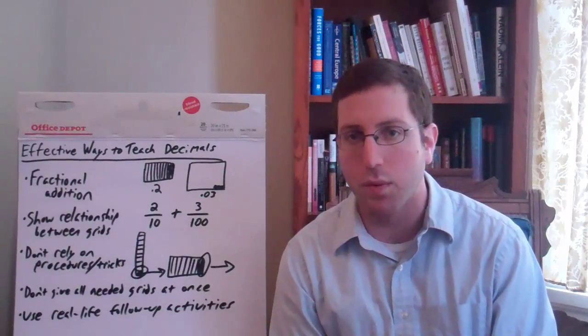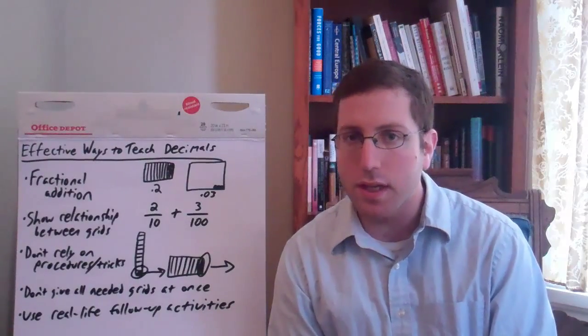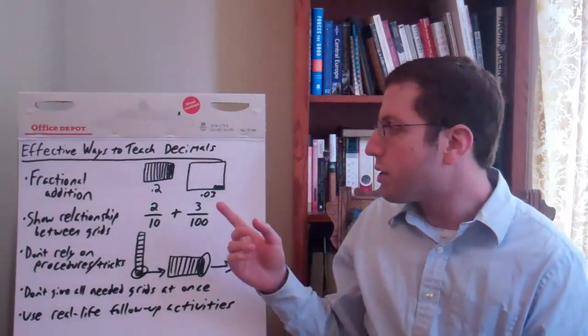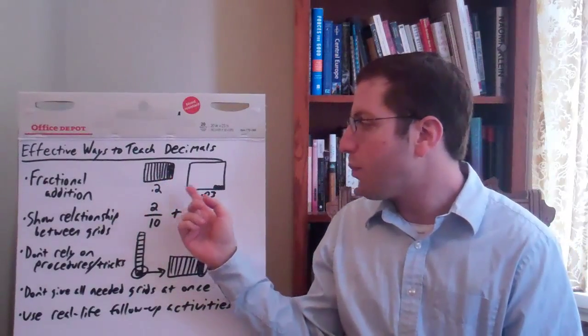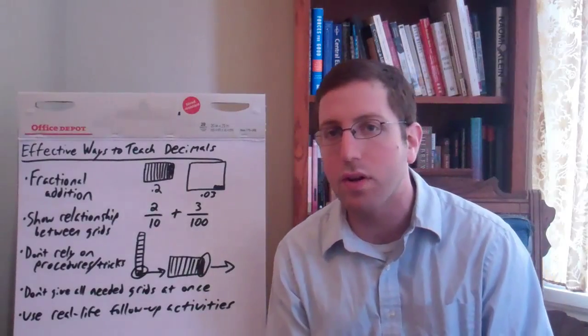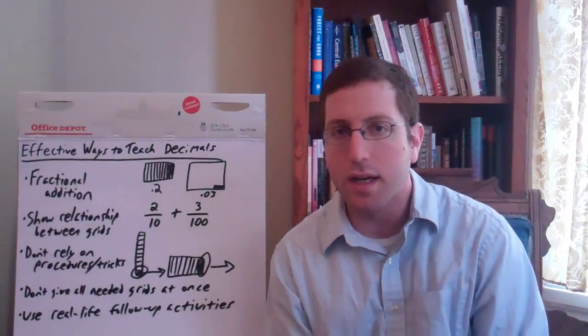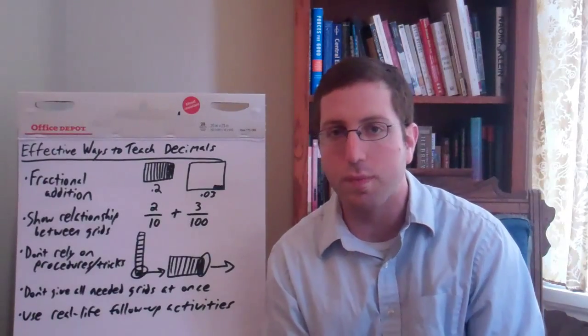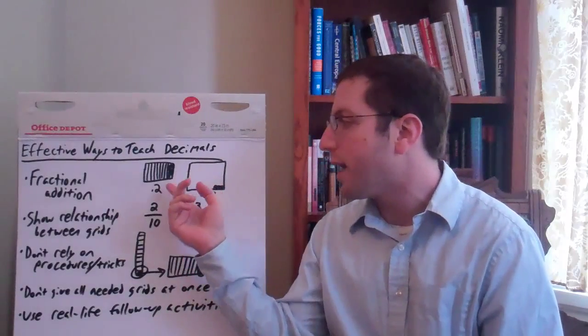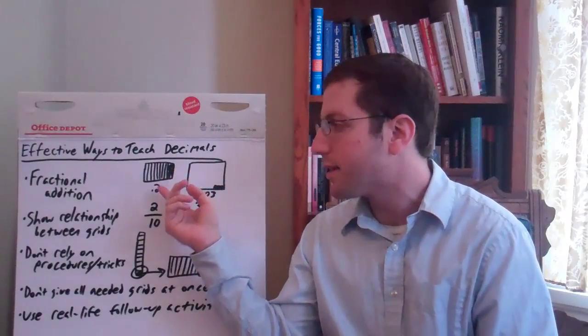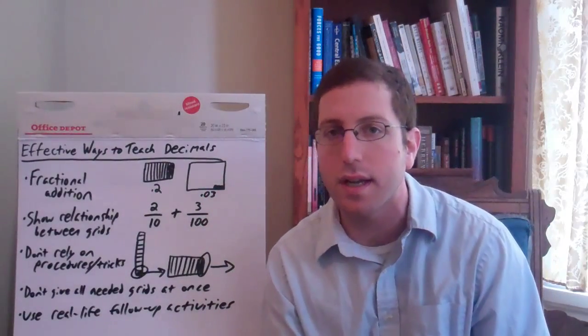One of the most common ones the authors talk about is the idea of the decimal grid, and just in case you're not sure what that is, that's essentially when you get various grids, one for the tenths, one for the hundredths which would have a hundred little squares, and it's a very common tool. Many curricula use this, many teachers use this, and you just have students shade in. If it's two tenths, two of the tenths grid gets shaded in. If it's three hundredths, three of the hundredths grid gets shaded in.